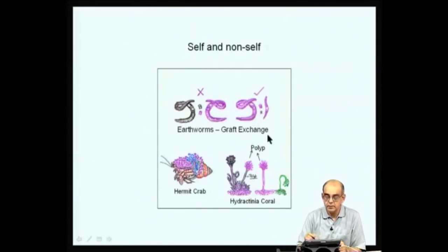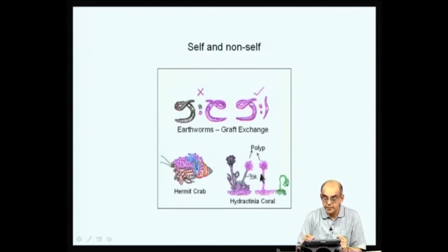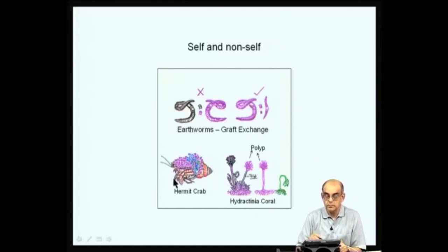This primitive distinction between self and non-self can also be seen in many other lower order specimens, like for example in corals. Corals have a lot of polyps — if you take one polyp and graft it onto another polyp, the red one shown here is strangling the green one, which means there is a distinction between self and non-self. All these polyps are growing on the shell inhabited by the hermit crab. Such examples are evident in many other phyla, but the immune system has evolved into a very complex system in higher animals.